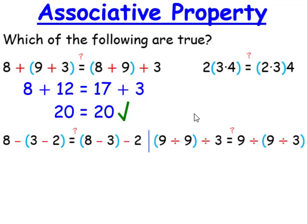When we look at the subtraction one, we're going to go 3 minus 2 first, and that's going to give us 8 minus 1. And 8 minus 3 gives us 5 minus 2. 8 minus 1 is 7, and 5 minus 2 is 3, and as you can see, 7 does not equal 3.